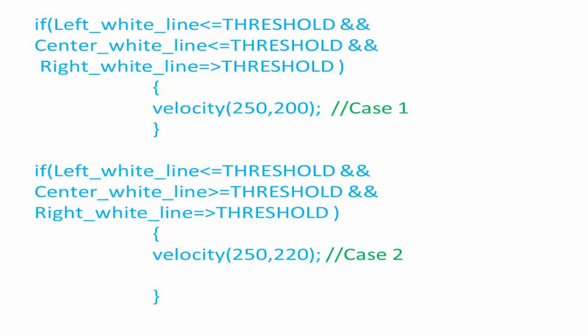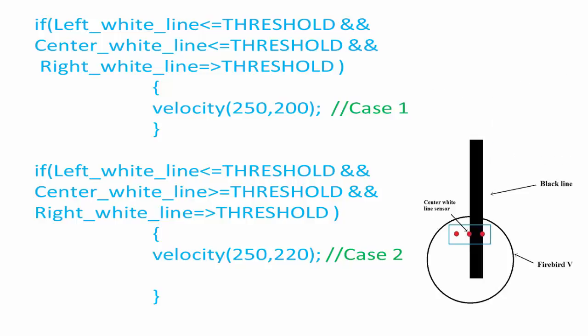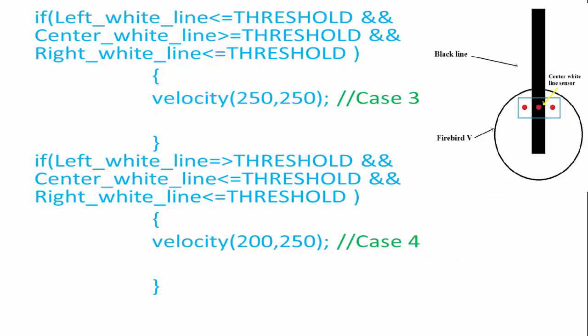The cases discussed earlier are written in the form of logical statements. Case 1 is when left white line and center white line are less than threshold and right white line is greater than threshold — the robot should turn soft right. Case 2 is when the black line is below the second and third line sensors — the robot should turn soft right with slightly higher velocity on the right wheel. Case 3 is when left white line and right white line are less than threshold and center white line is greater than threshold — the robot should go straight.